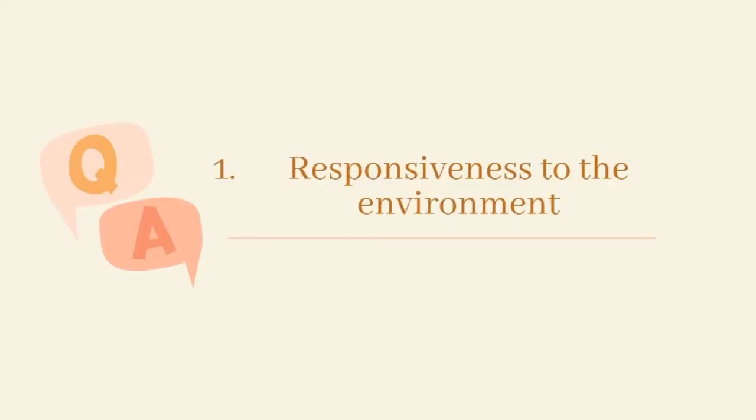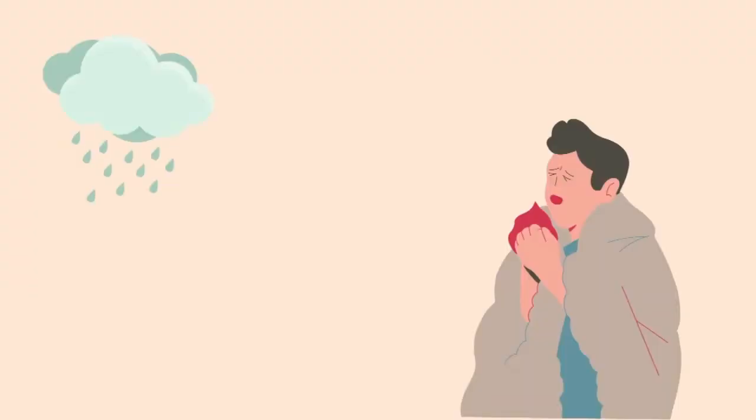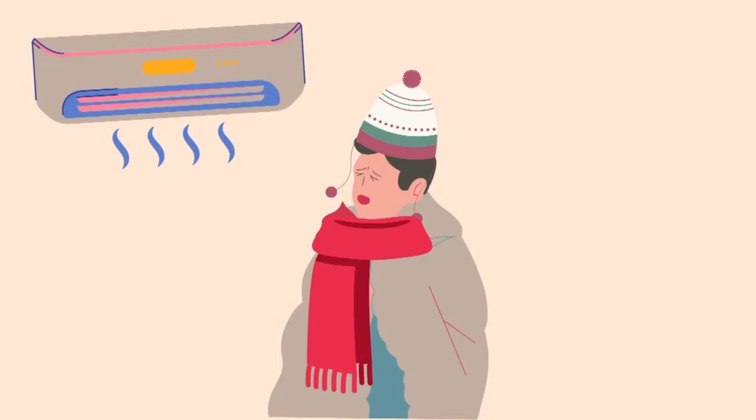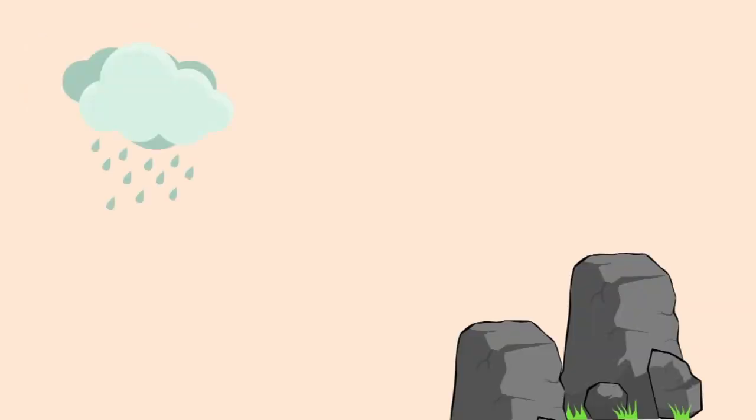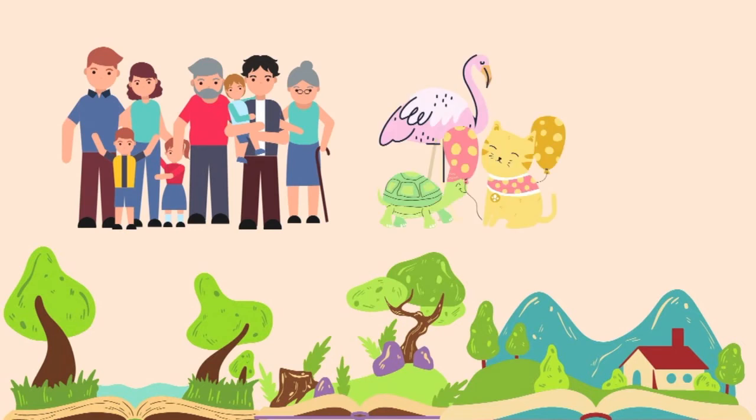1. Responsiveness to the environment. All living things respond to their environment. If you, who are certainly alive, feel cold, you will turn on the heater or wear more clothes. However, a rock, which is non-living, won't have any actions no matter how cold it is. By responding and adjusting to an environment, organisms or living creatures can adapt and live better.